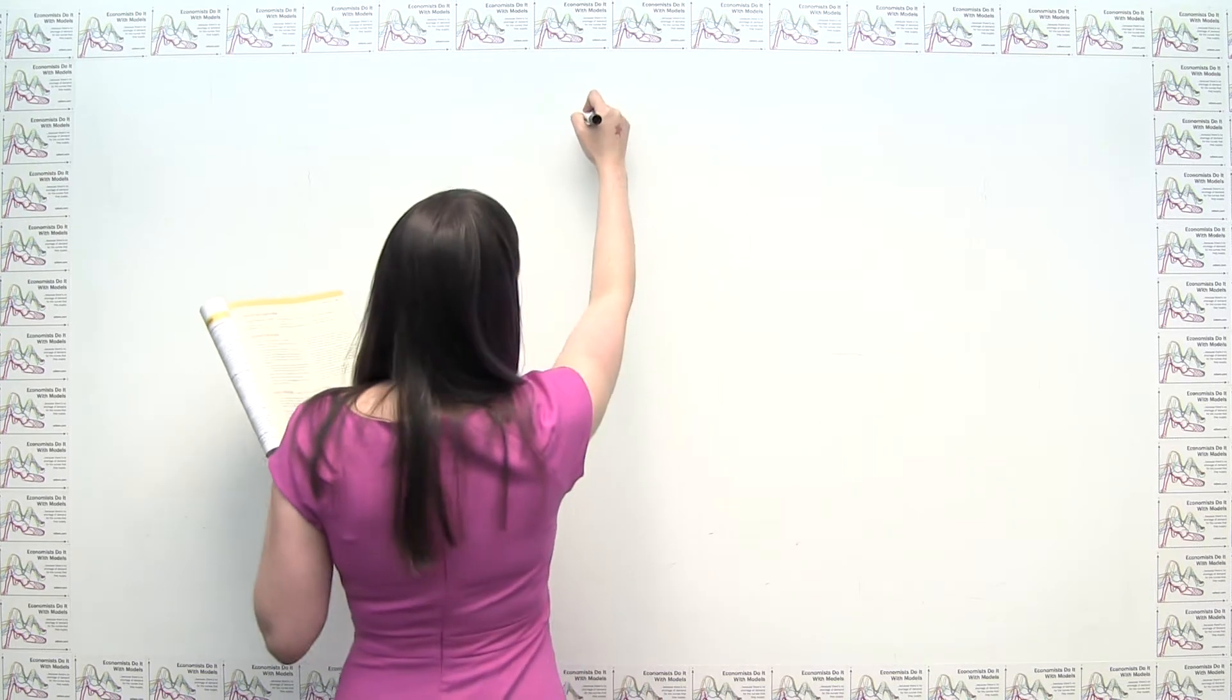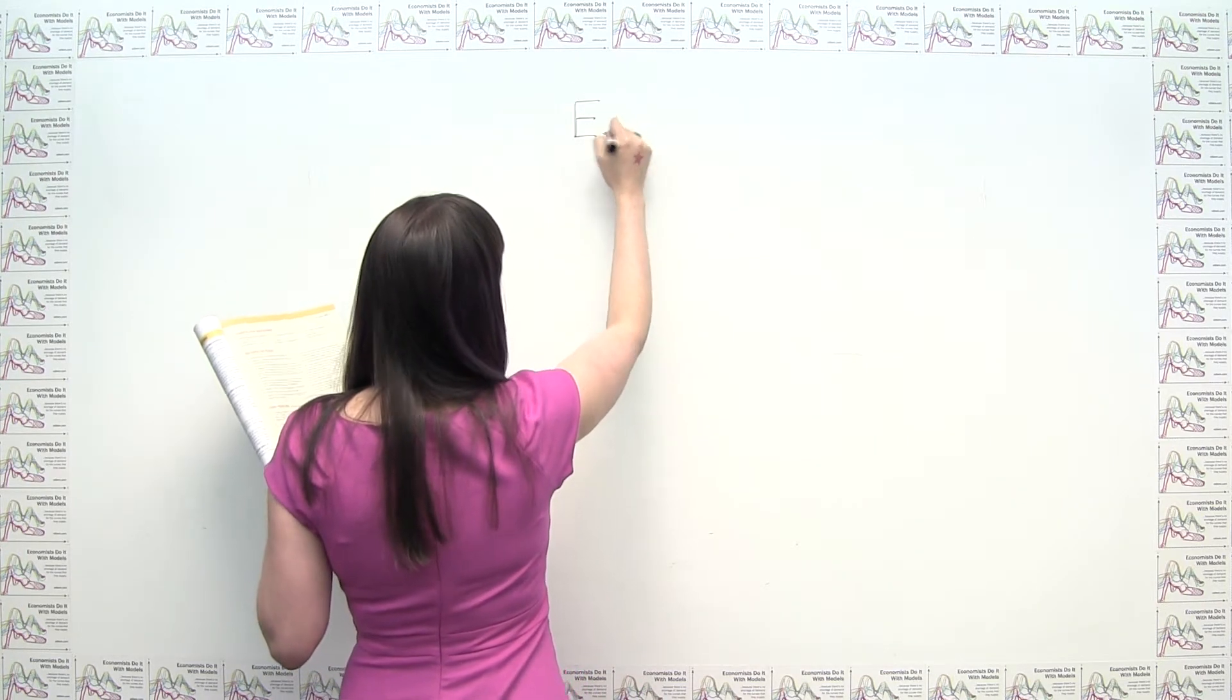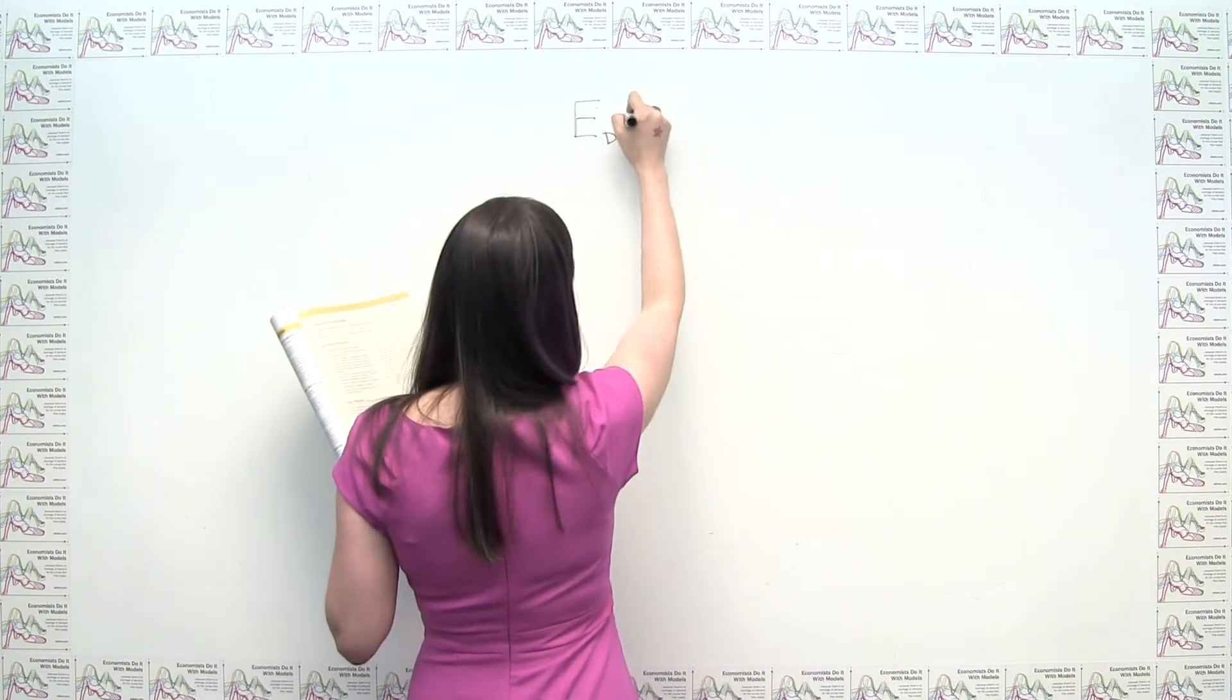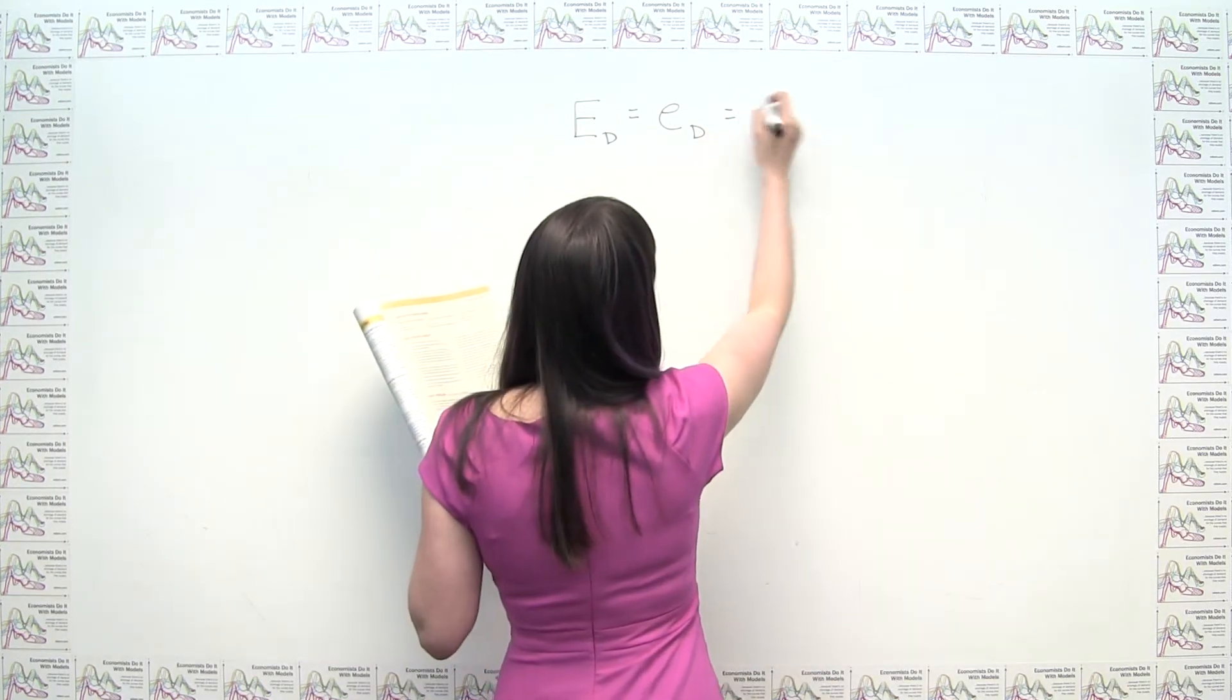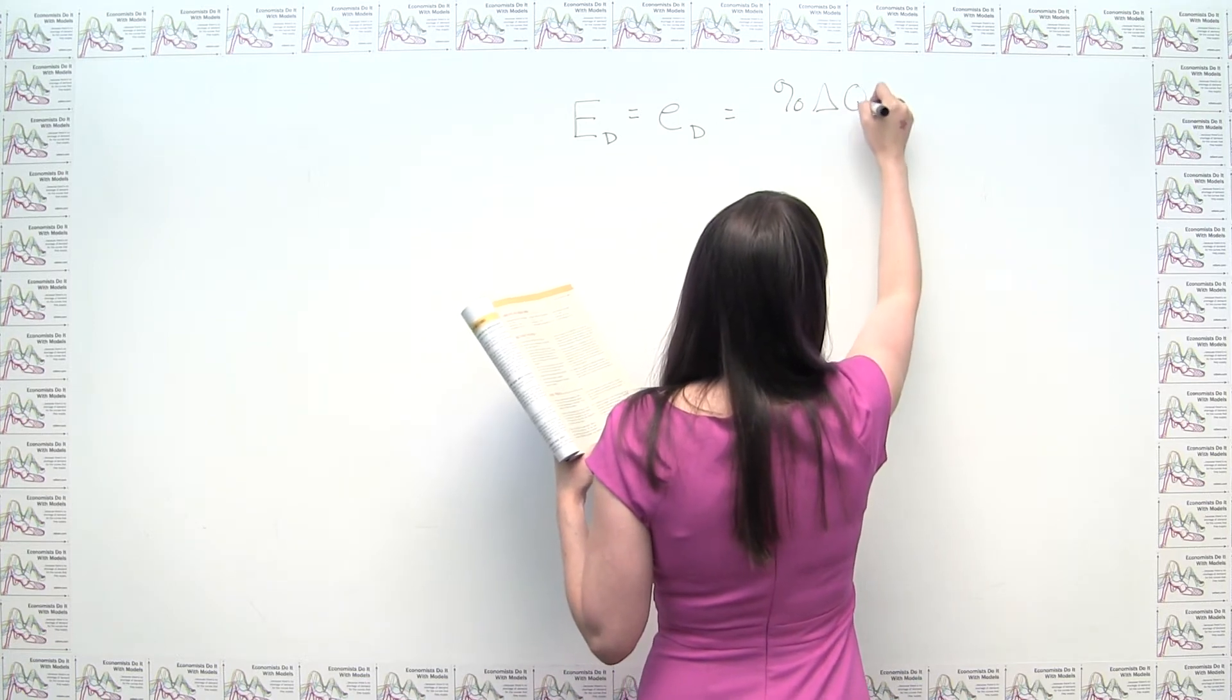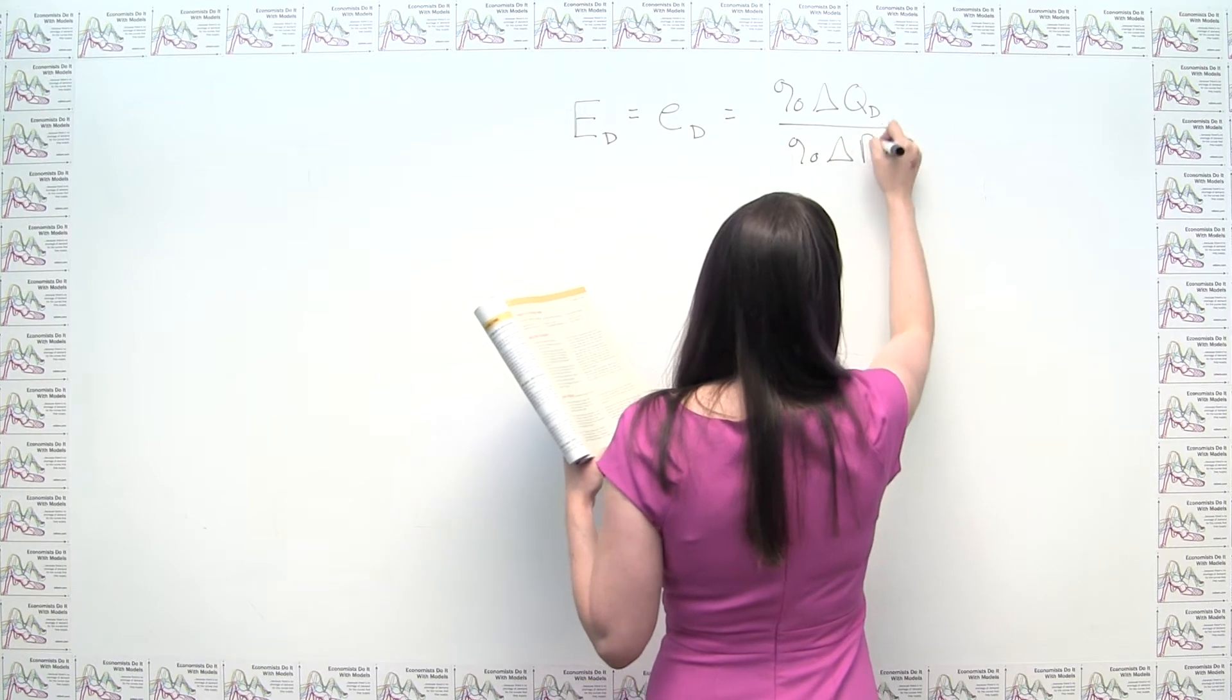But here we'll just use the very basic formula for price elasticity of demand. And we can say that price elasticity of demand, in the Mateer and Coppock textbook, it's capital E-sub-D. In some other textbooks, it's little e-sub-D. And we just say that this is equal to the percent change in quantity demanded divided by the percent change in price.